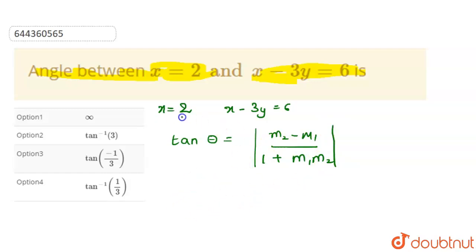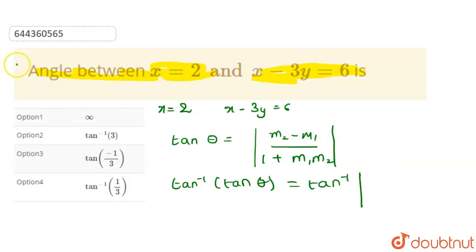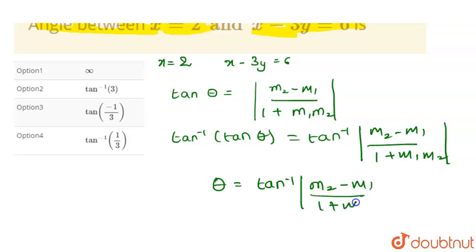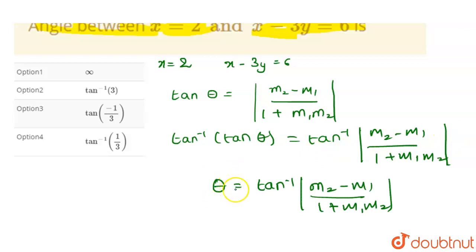Here m₁ and m₂ are the slopes of the equations of the lines. Multiplying by tan inverse on both sides, we get tan⁻¹(tan θ) = tan⁻¹((m₂ - m₁) / (1 + m₁m₂)), which gives us the formula for θ: θ = tan⁻¹((m₂ - m₁) / (1 + m₁m₂)).